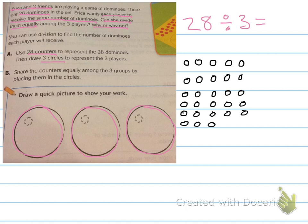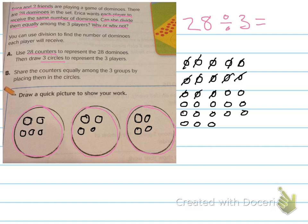Now I have my 28 counters. Share the counters equally among the three groups by placing them in the circles. Draw a quick picture to show your work. So cross it out, put it in. Cross it out, put it in. I'm going to keep doing this until all my counters are in the three circles and there's an equal amount in each one, and I can't go on any more. Still got plenty to go. I'm going to keep going.